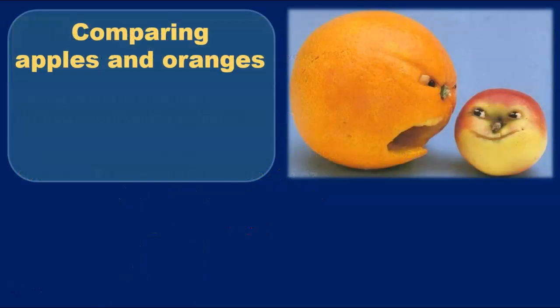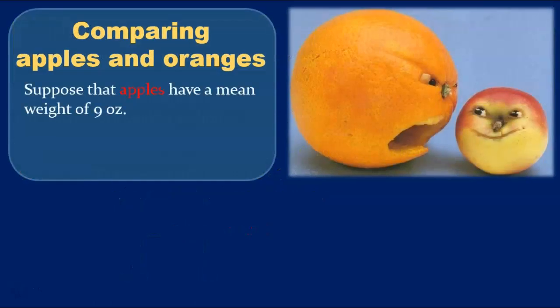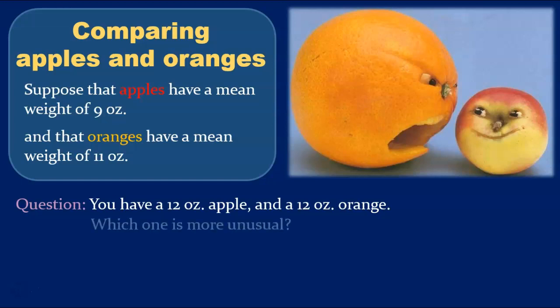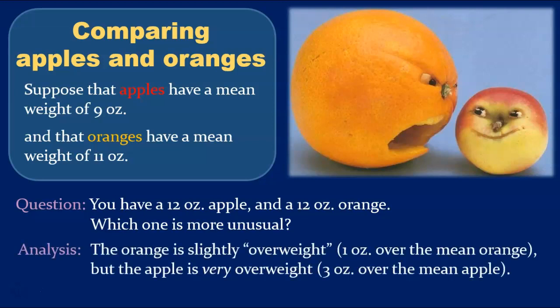Let's turn to another sort of question. Suppose that apples have a mean weight of 9 ounces, and that oranges have a mean weight of 11 ounces. Suppose further that you have a 12-ounce apple and a 12-ounce orange. Of these two fruits, which one is more unusual? The orange is slightly overweight, 1 ounce over the mean, but the apple is very overweight, 3 ounces over the mean apple. Thus, the apple is more unusual. How does that analysis sound to you?